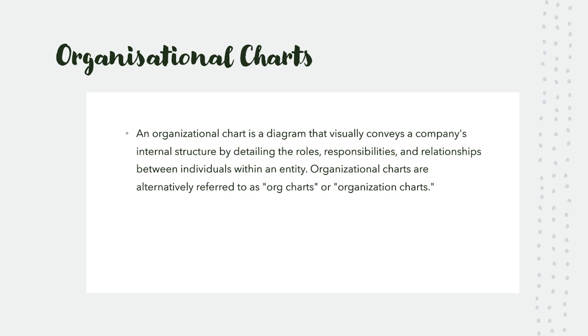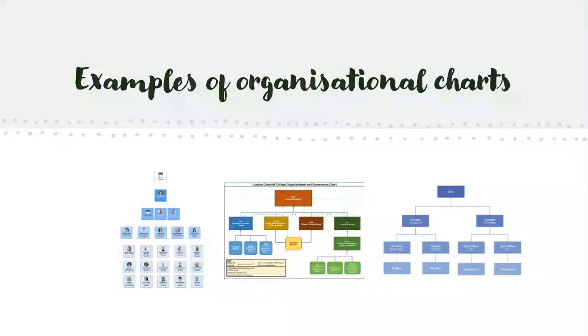Organizational charts is a diagram that conveys a company's internal structure by detailing the roles, responsibilities, and relationships between individuals within an entity. Organizational charts are alternatively referred to as org charts or organization charts. It basically shows you the company's hierarchical order and how each department really works together.